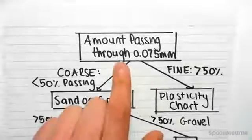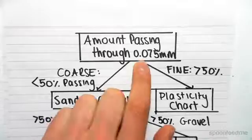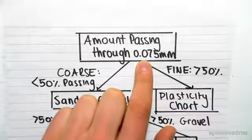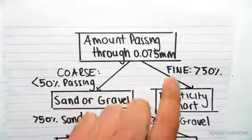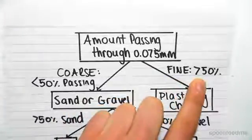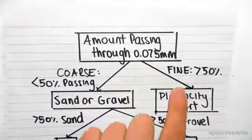So we first need to work out how much of our soil sample can pass through 0.075 mm, and for a fine soil, more than 50% passes through, which is going to take us to this thing called the Plasticity Chart.